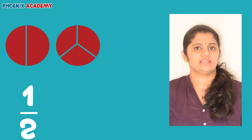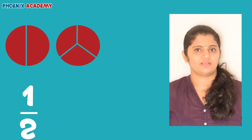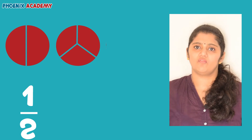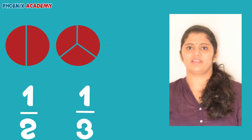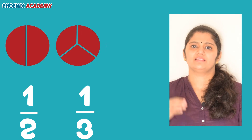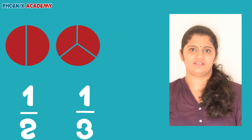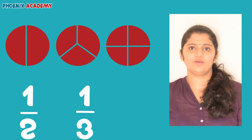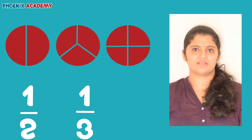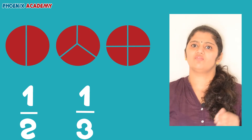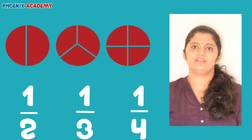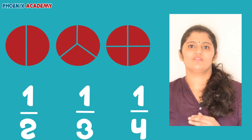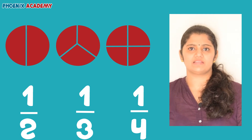Now the circle is divided into three equal parts. Each part is called one third. It is written like this. Three one-thirds make a whole circle. Now the circle is divided into four equal parts. Each part is called one fourth. Four one-fourths make a whole circle.